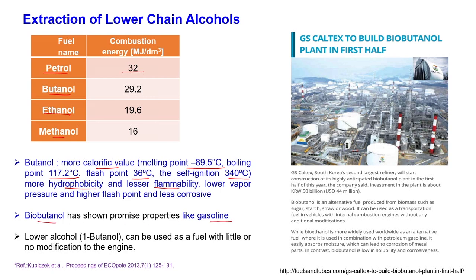Bio-butanol has shown promising properties similar to gasoline. Lower alcohols thus can be used as fuel with little or no modification to the engine. GS Caltex, South Korea's second-largest refiner, is building a bio-butanol plant. Bio-butanol is an alternative fuel produced from biomass such as sugar, starch, straw, and wood, and can be used in transportation fuel. Bio-ethanol is widely used but easily absorbs moisture, which can corrode metal parts. Because of these reasons, bio-butanol is coming into the picture — it has lower solubility in water and lower corrosive nature compared to ethanol.